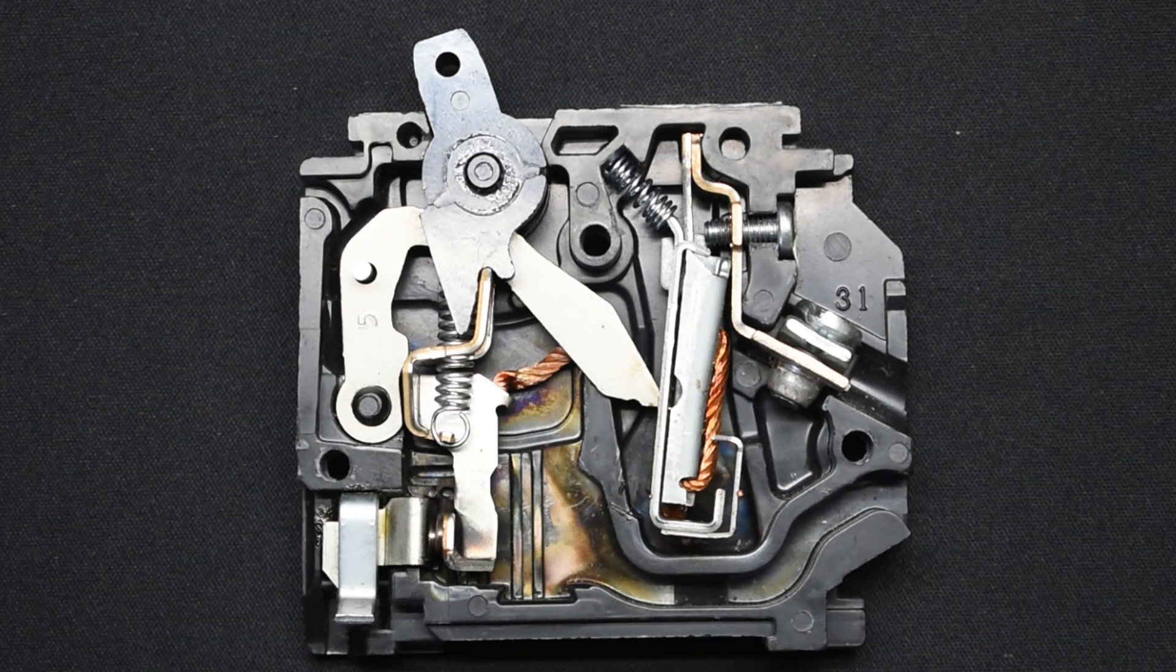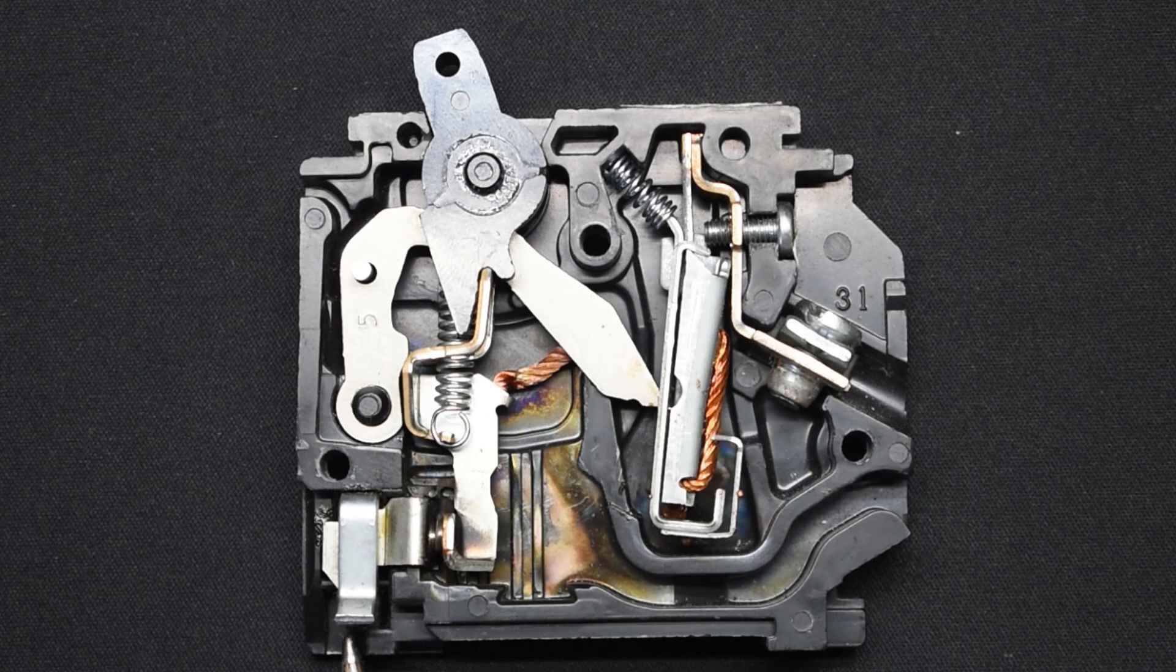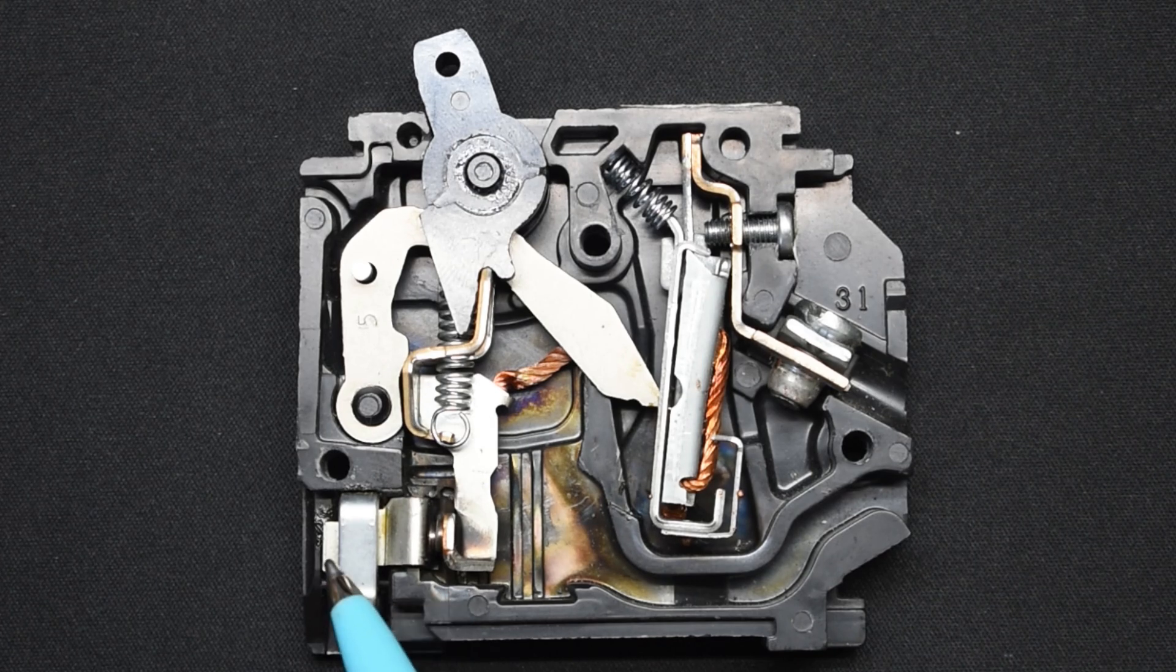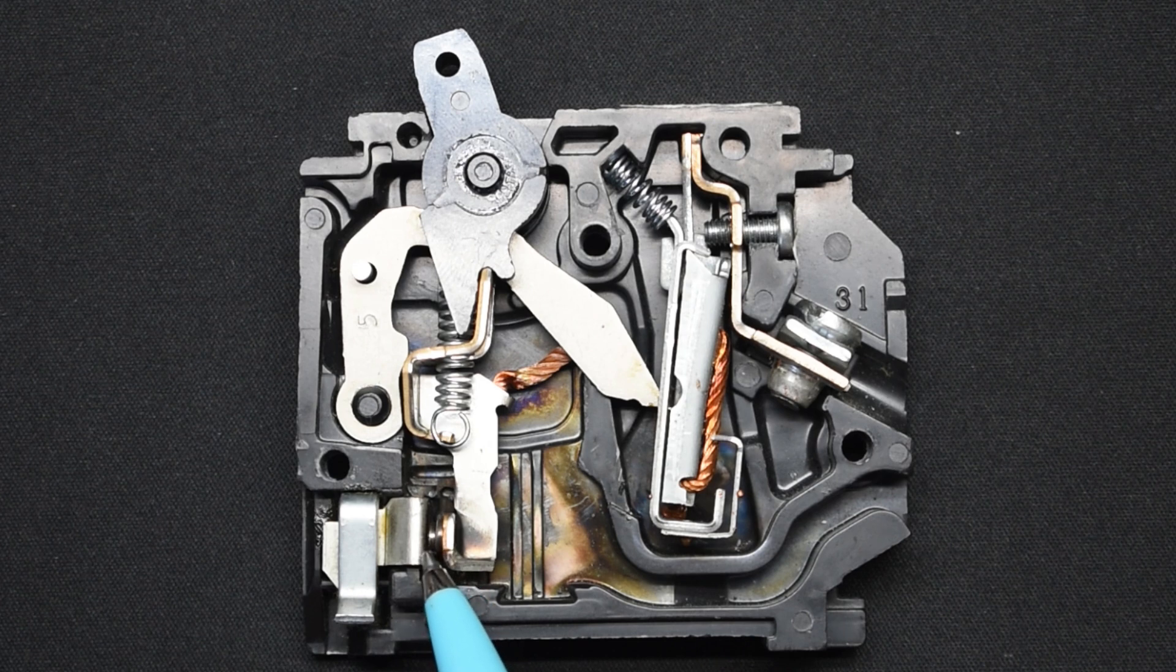The breaker is already in the on position, so the bus bar where the 120 volts would be connecting to the breaker would be right at this point right here. Power flows in and you can see the connection being made between these contacts.